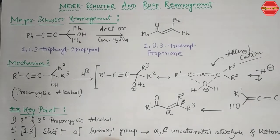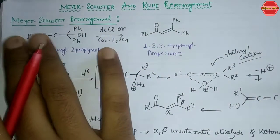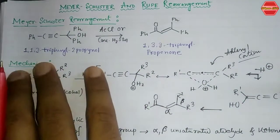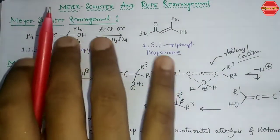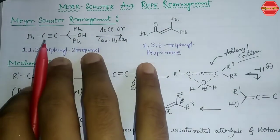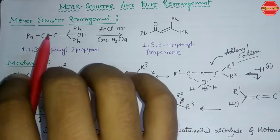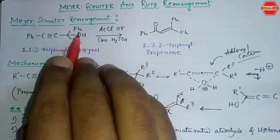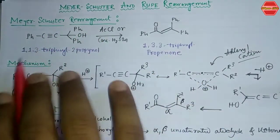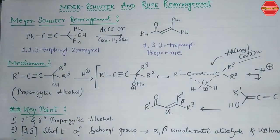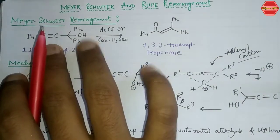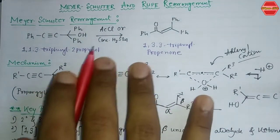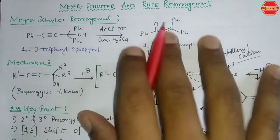First, we are taking the Meyer-Schuster rearrangement. The kind of substrate that undergoes this rearrangement is a propargylic alcohol. A propargylic alcohol is basically a compound where you have a triple bond (C≡C) and an OH group adjacent to it. If you treat this kind of substrate in the presence of a protic acid or a Lewis acid like acetyl chloride (AcCl) or a strong acid like concentrated H₂SO₄, you get this kind of substrate.